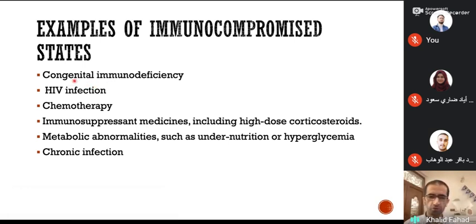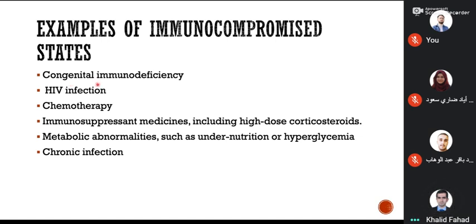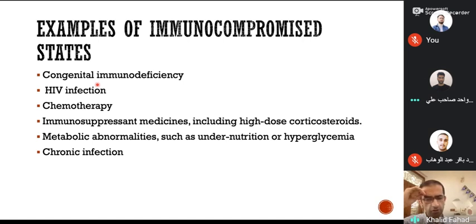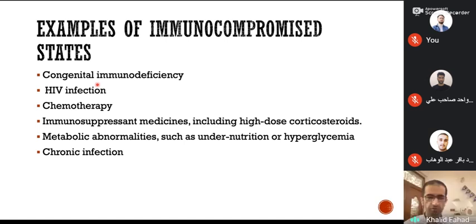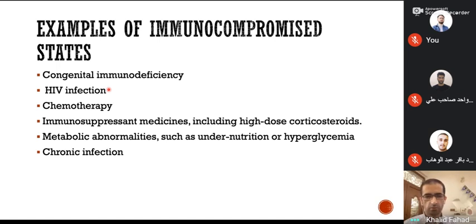Could you name an example of congenital immune deficiency from the immunology course? Hypogammaglobulinemia — yes, very good. Another example? Burton's disease, or agammaglobulinemia — very good. DiGeorge syndrome is a classical example of cellular immune deficiency, which presents with hypoparathyroidism, hypocalcemia, and absence of the thymus gland. So these are examples of humoral and cellular deficiency states.